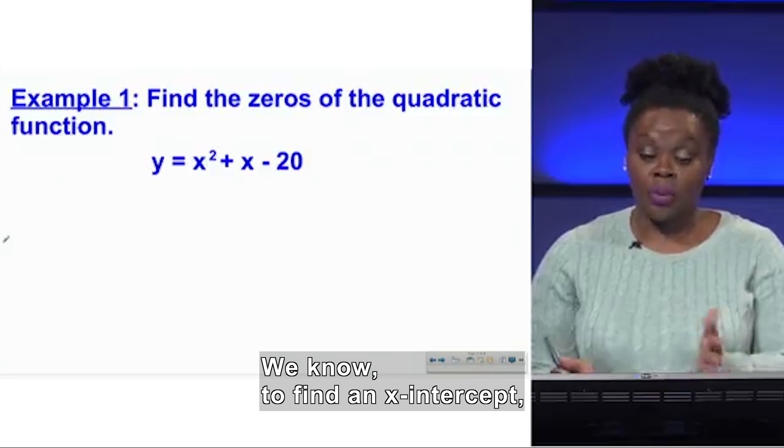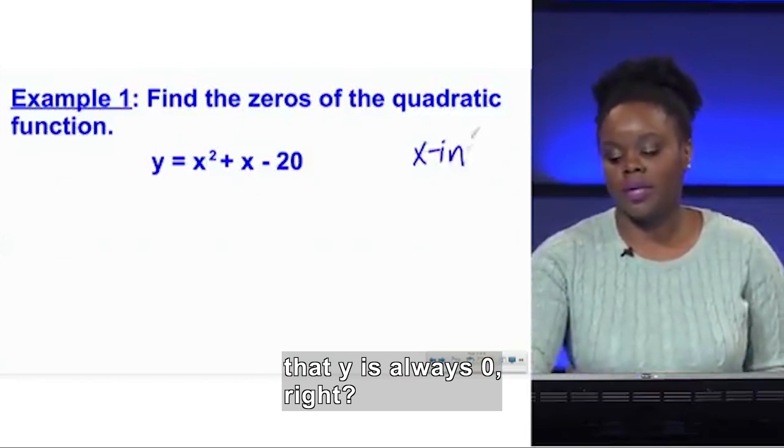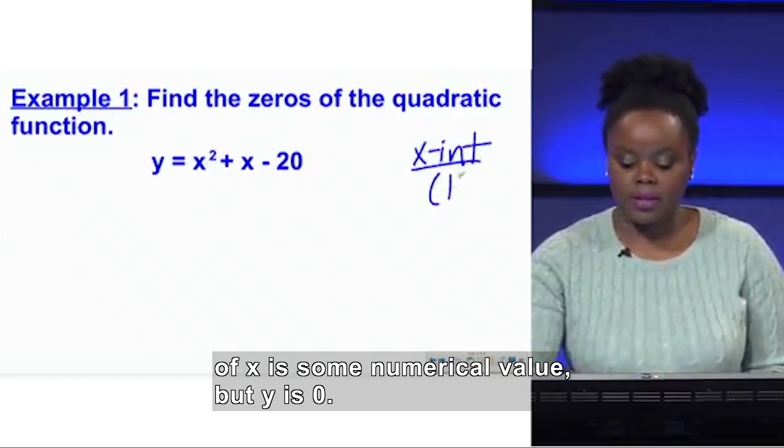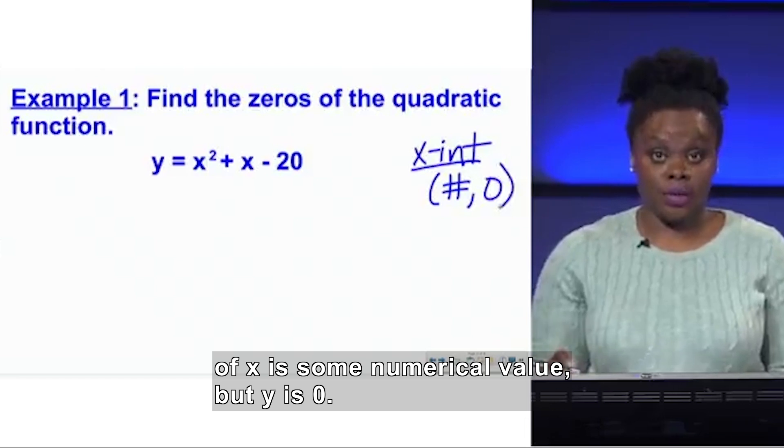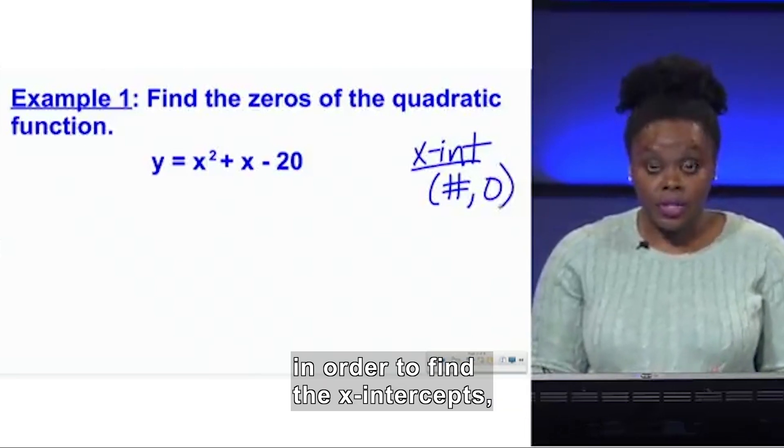So we know to find an x-intercept, she writes, that y is always zero, right? X-intercepts always take the form of x as some numerical value, but y is zero. So when given this quadratic function, in order to find the x-intercepts, we're going to want to start by replacing y with zero.